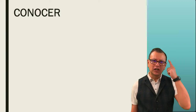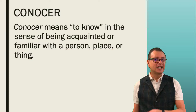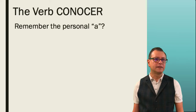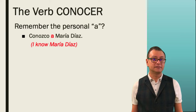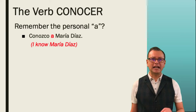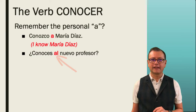Conocer is about how familiar you are with a place, an object, or a person. The verb conocer requires the personal 'a,' which is a preposition, when you refer to knowing someone. For example, 'yo conozco a María Díaz' — I know María. Notice that because María is a person, I put 'a' after the verb. However, if I ask about someone masculine, like '¿conoces al nuevo profesor?' I would put 'al' because it's masculine. Did you know the new teacher?